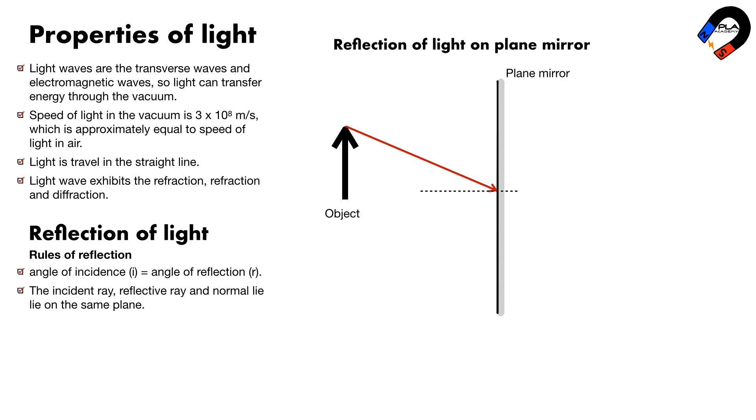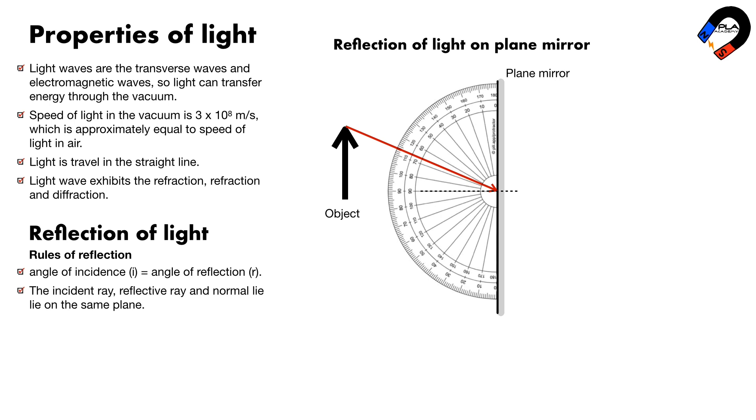Draw the normal line at right angles to the plane mirror. Measure the angle of incidence I between the normal line and the incident ray. Measure the angle of reflection R between the normal line and the reflective ray. Both angles must be equal. Draw the reflective ray.